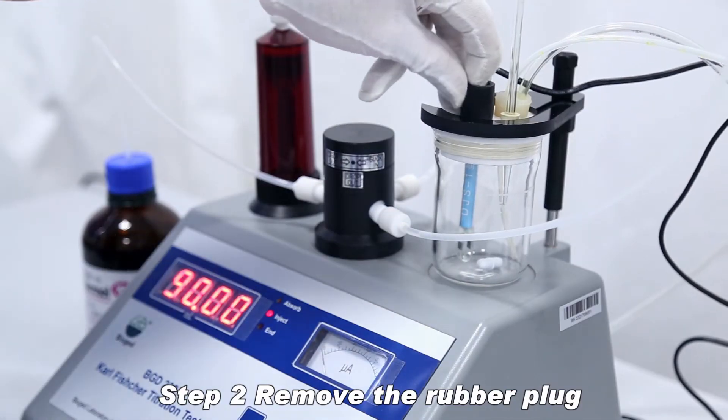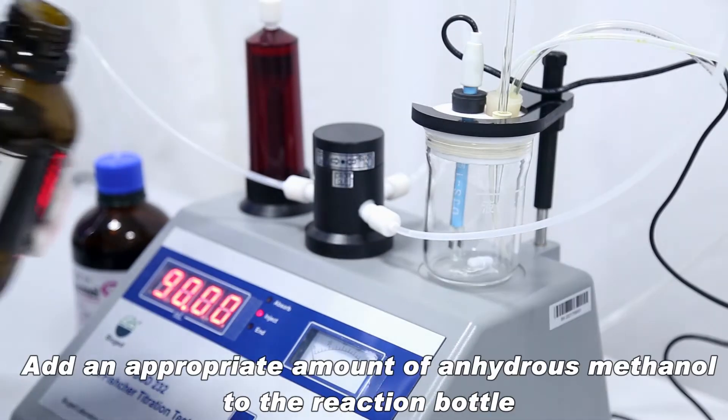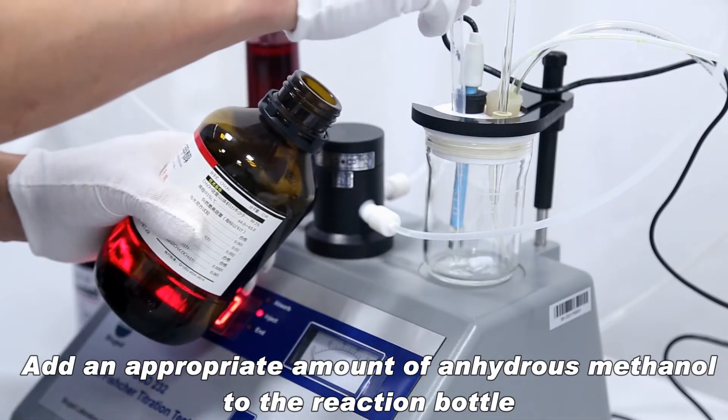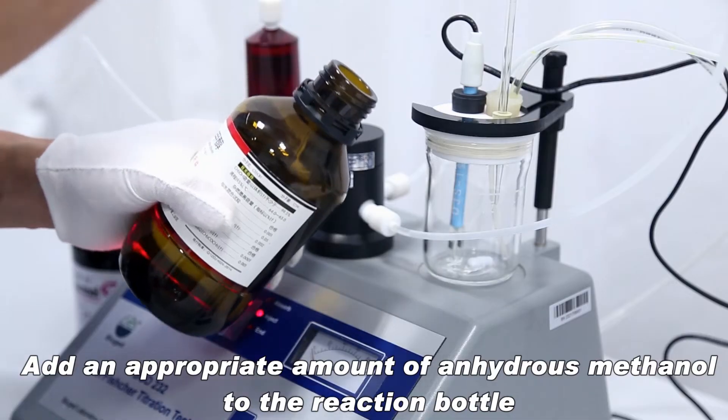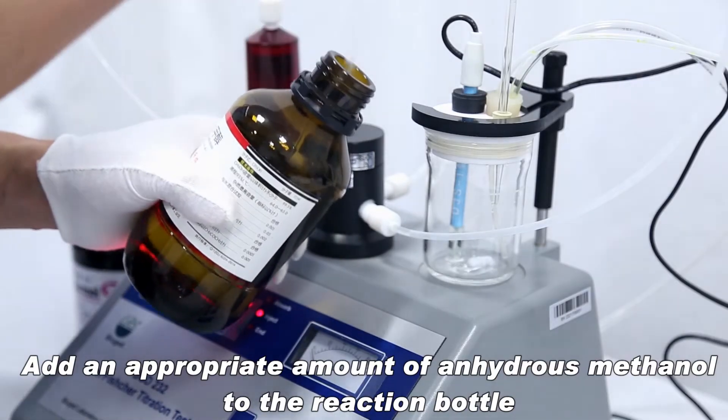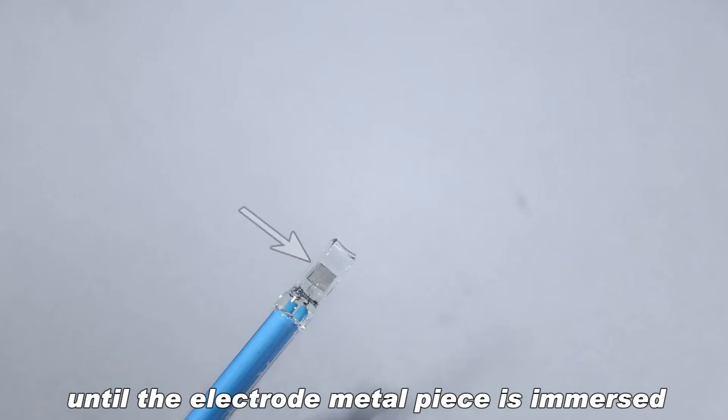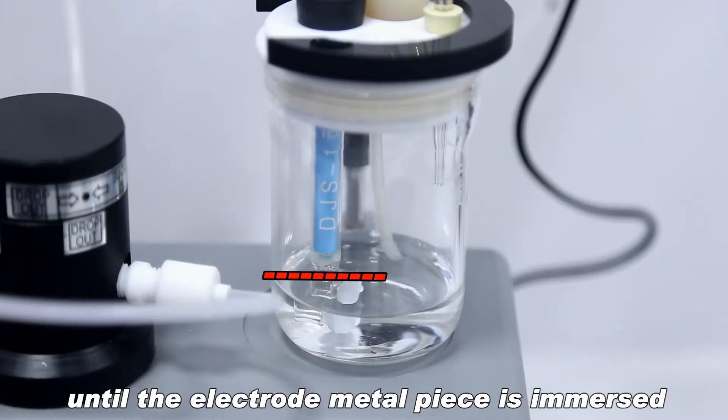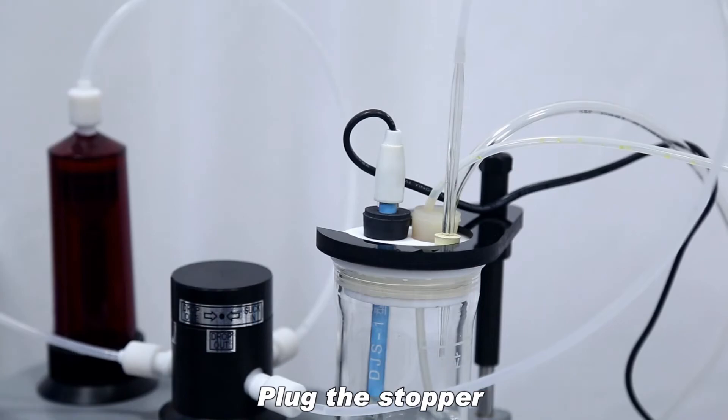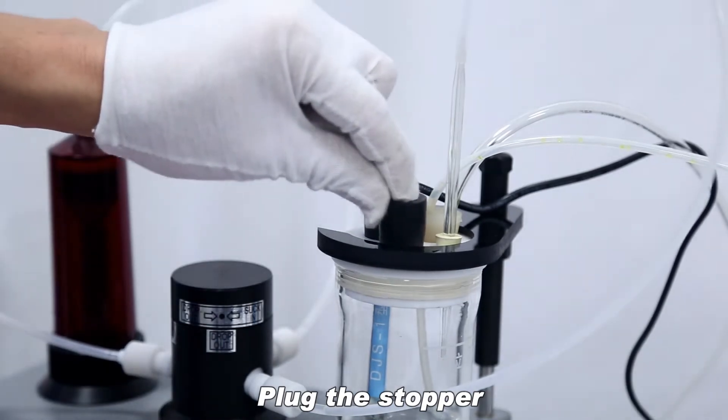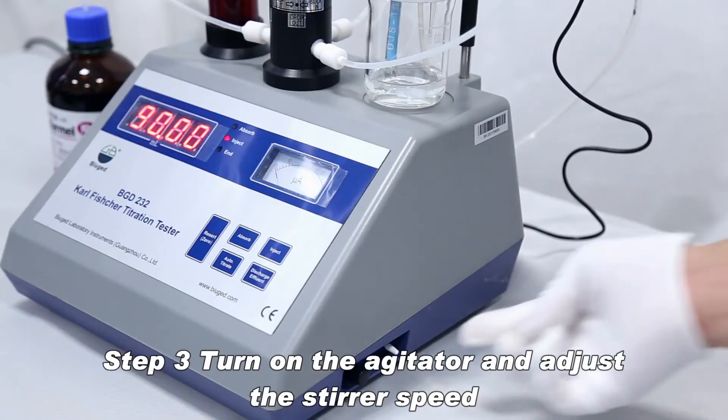Remove the rubber plug. Add an appropriate amount of anhydrous methanol to the reaction bottle until the electrode metal piece is immersed. Plug the stopper. Turn on the agitator and adjust the stirrer speed.